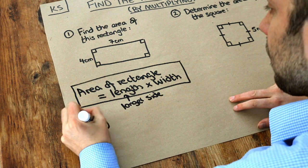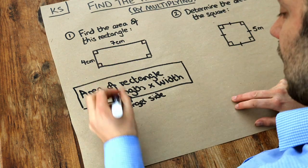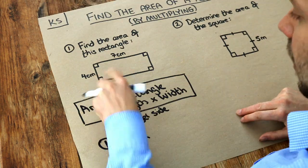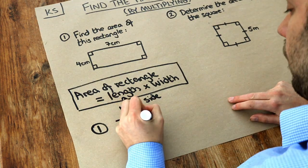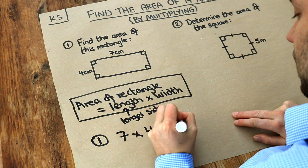So let's take this one here. We've got the length which is 7. We multiply it by the width which is 4. And 7 times 4 is equal to 28.